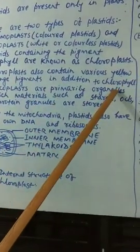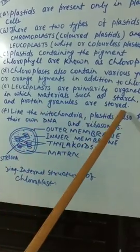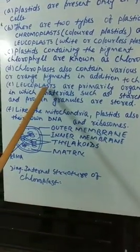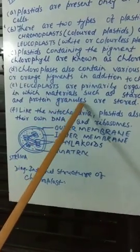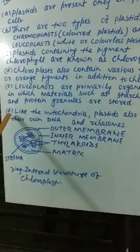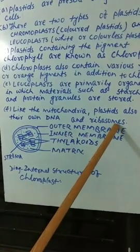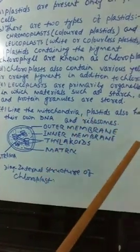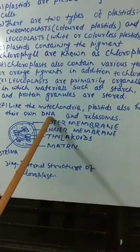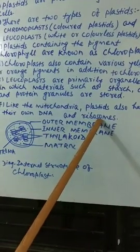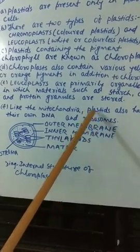Leucoplasts are primarily organelles in which materials such as starch, oil, and protein granules are stored. Like the mitochondria, plastids also have their own DNA and ribosomes. This is a similarity between mitochondria and plastids. Therefore, questions are asked: excluding the nucleus, name the cell organelles having their own DNA.